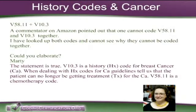Well, this is real easy. Marty is the one that had asked this. It's true — you cannot code these two codes together, because when you look up V10.3 and read the guidelines of a history code, it states that, for example, a code for history of breast cancer cannot be used if the person is getting treatment for breast cancer. Therefore, if you're going to use V10.3, that means it's a history.